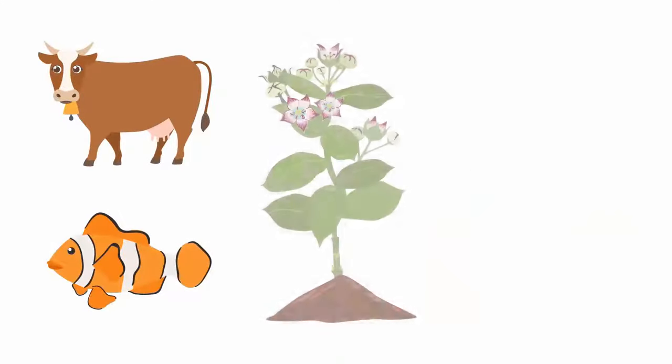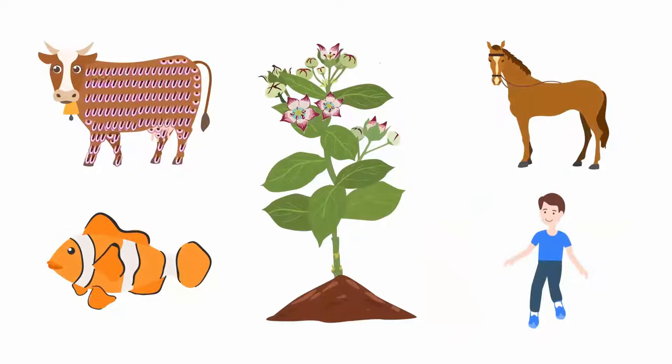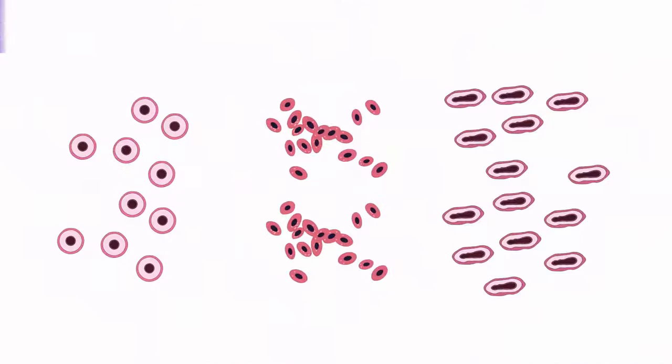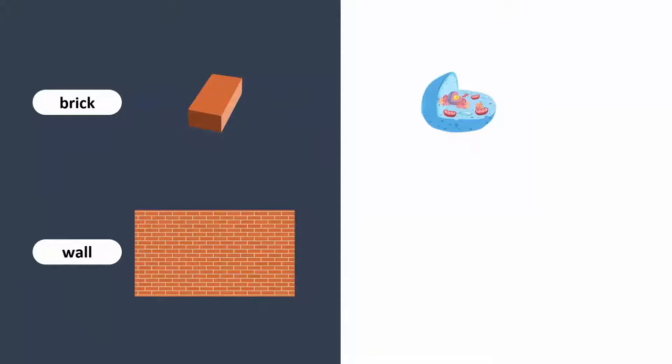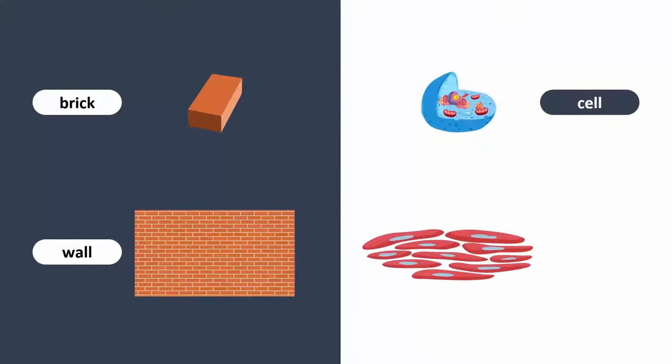Similarly, all living things are made up of building blocks known as cells. Just as bricks combine to form walls, similar cells that perform a similar function combine to form tissues.